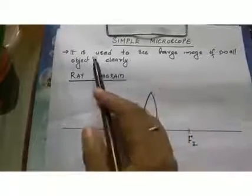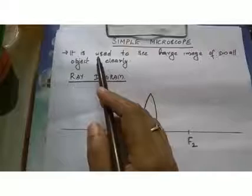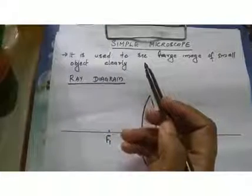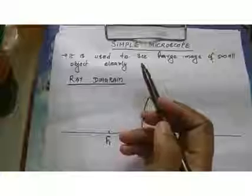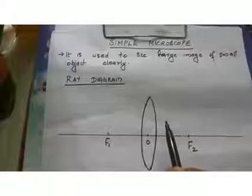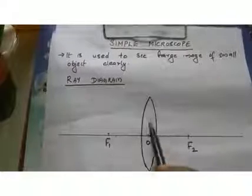Let's discuss about simple microscope. Why do we use a simple microscope? A simple microscope is an instrument which is used to see a large image of small objects clearly. Microscope is used to obtain a magnified image of very small objects. Let's discuss how a simple microscope helps us obtain a larger image of small objects clearly with the help of a ray diagram. For that, I have considered a convex lens, because a simple microscope consists of a single convex lens — and it is a double convex lens.